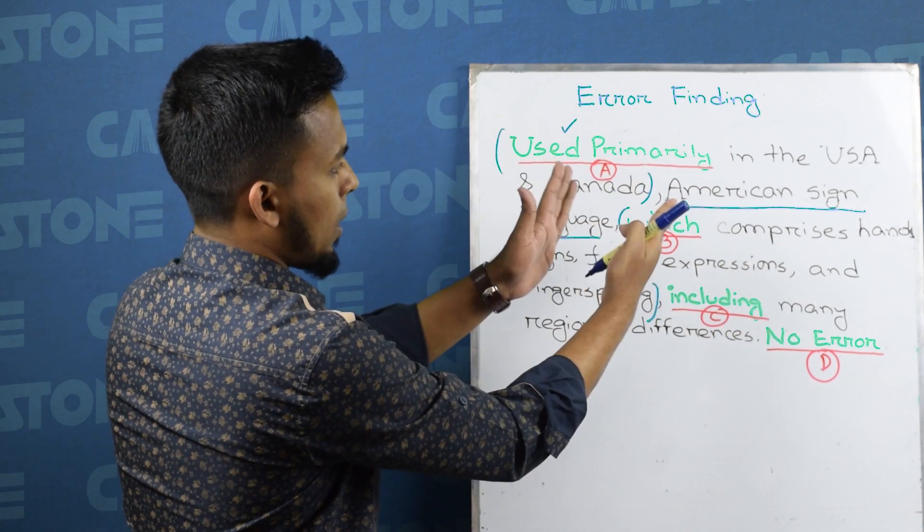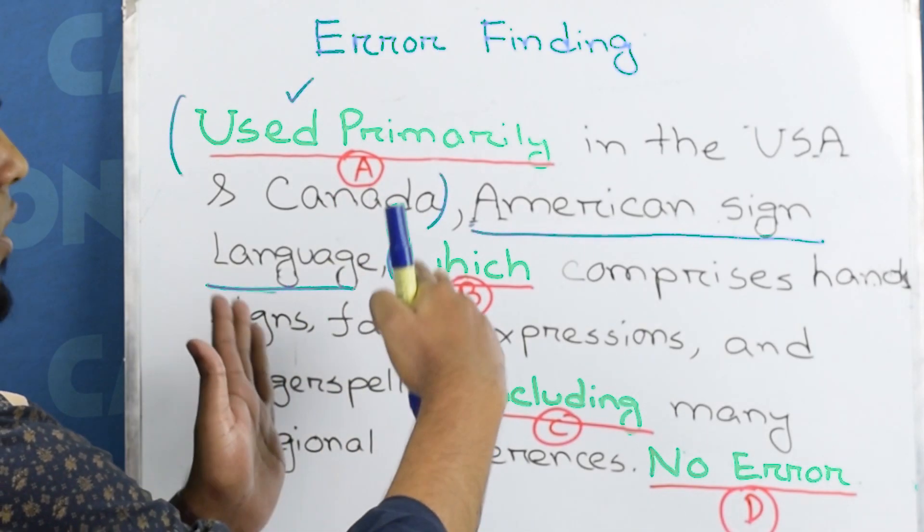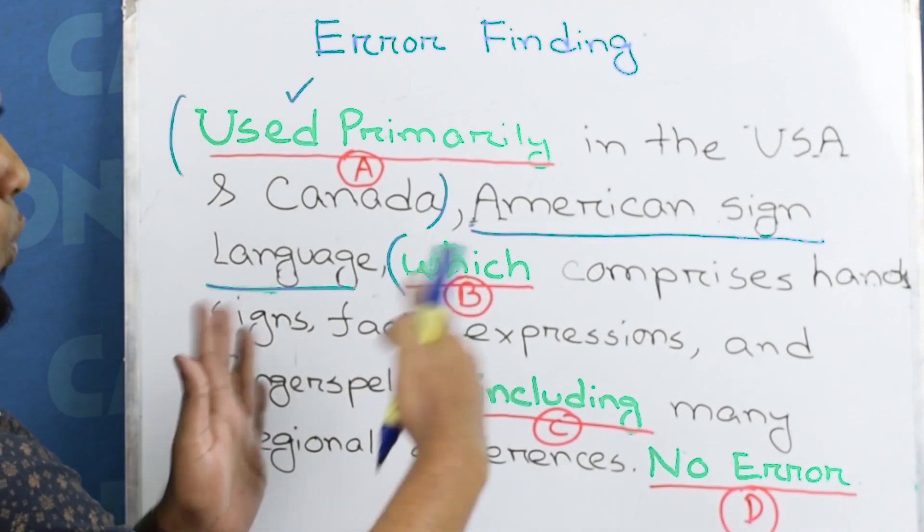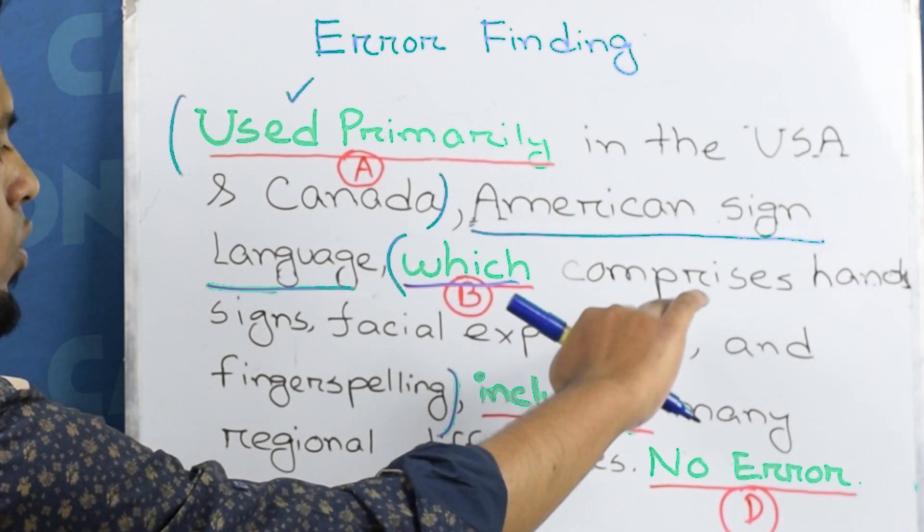However, we need to check the word usage. Because it is the first part of the sentence, and in the second part there is further information that starts with which. So which represents the language. The language is comprised of hand signs and facial expressions.